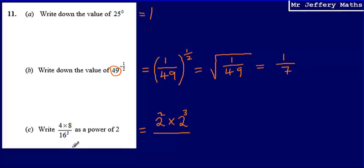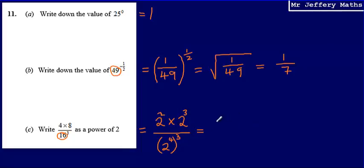I've got 16 cubed. If I think about 16 as a power of 2: since 8 is 2 cubed, then 16 will be 2 to the power of 4. So 16 cubed is 2 to the power of 4 raised to the power of 3. Now I've got all values as powers of 2. I've got 2 squared times 2 cubed, and when multiplying indices, I add the powers — so that gives me 2 to the power of 5.